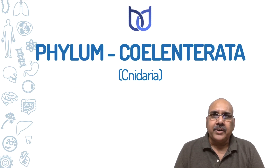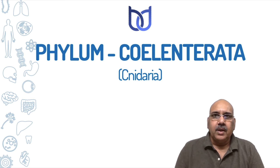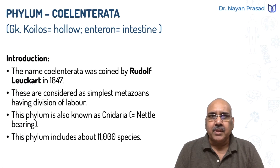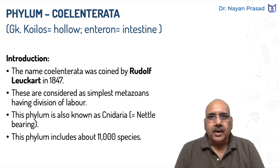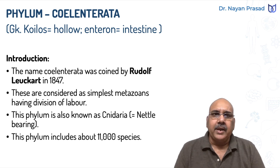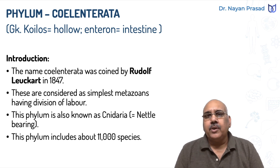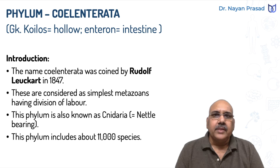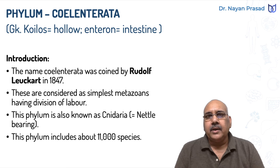Phylum Coelentrata is also called Cnidaria. This is the simplest group of multicellular animals having division of labor. The term Coelentrata has been taken from the Greek language, in which 'koelos' means hollow and 'enteron' means intestine. The name Coelentrata was coined by Rudolf Leukert in 1847.